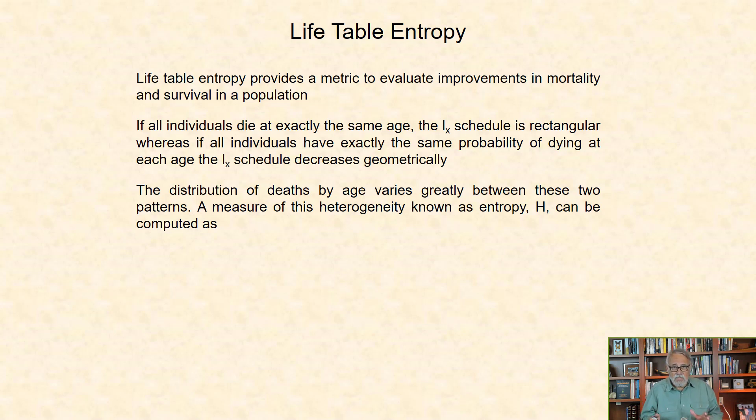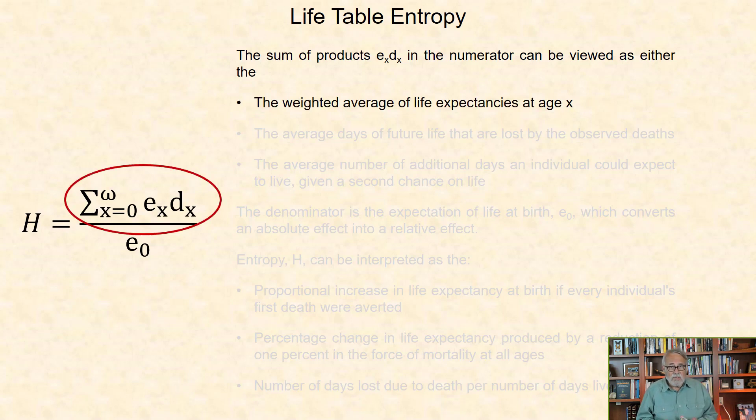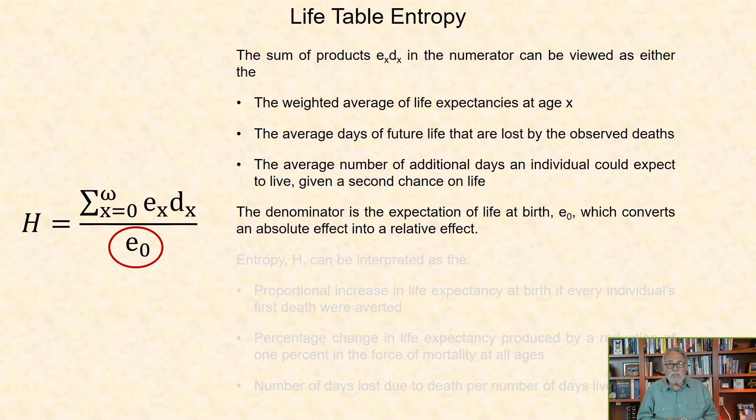A measure of this heterogeneity, known as entropy, denoted H, can be computed with this formula. The sum of products EXDX in the numerator can be viewed as either the weighted average of life expectancies at age X, the average days of future life that are lost by the observed deaths, or the average number of days an individual could expect to live if given a second chance on life. The denominator is the expectation of life at birth, E0, which converts an absolute effect into a relative effect.